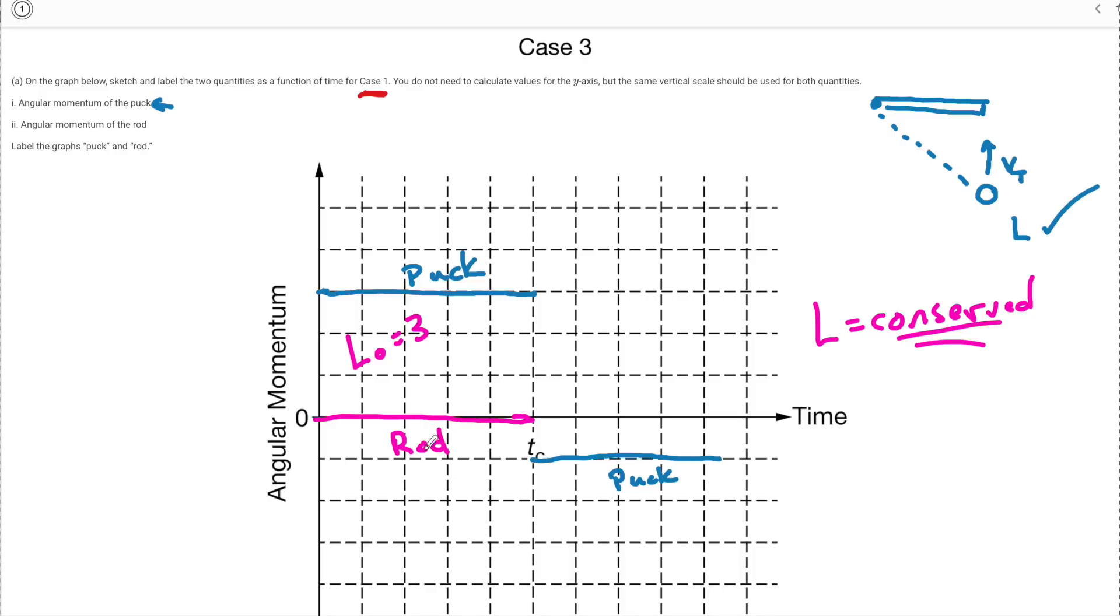So when I do my rod after the collision L must still be three units. So if this is minus one unit then I know that my rod is going to have some angular momentum at four up here. Now I have one unit two three four minus that one it is still conserved.